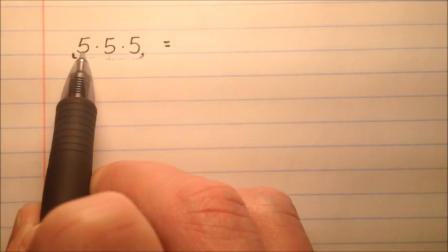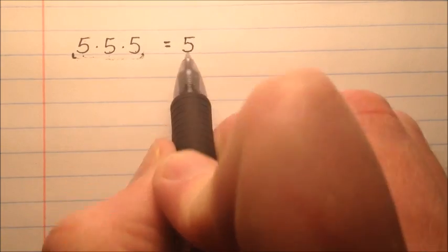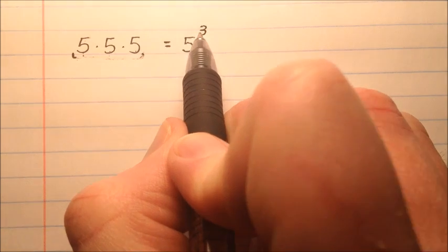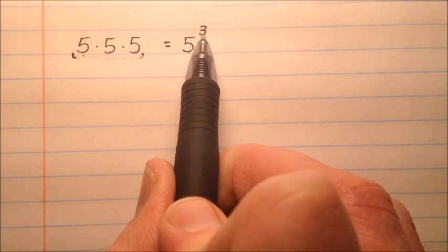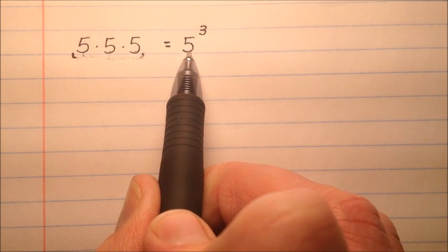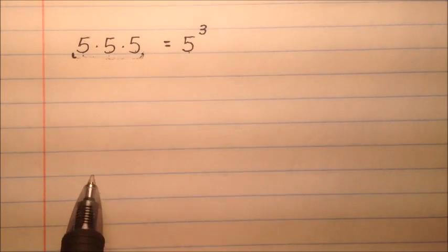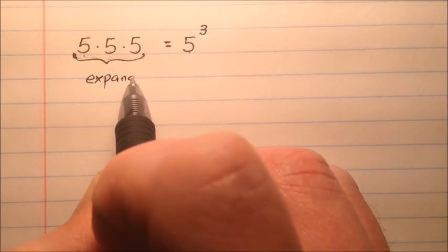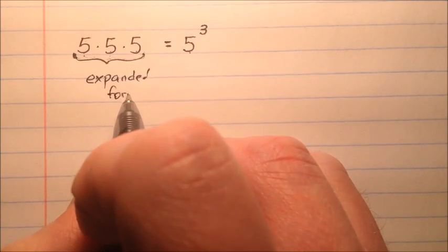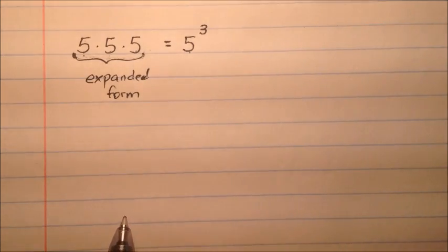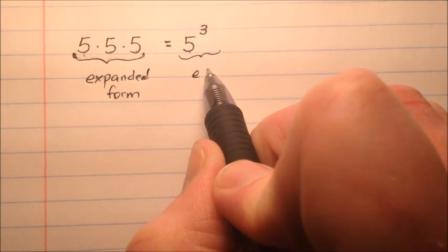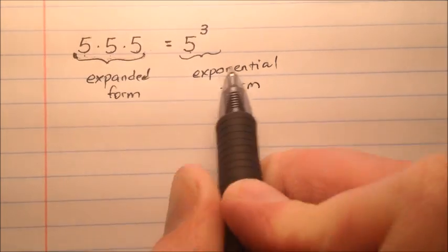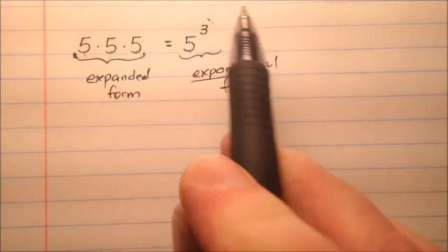In this case, we're multiplying five over and over again — that's the number we're multiplying — and we're doing it three times. So we're going to read this as five to the power of three, because we're multiplying five by itself three times. We call this expanded form, because the numbers are all multiplied out, and we call this exponential form because we're using an exponent — we have this exponent of three up here.